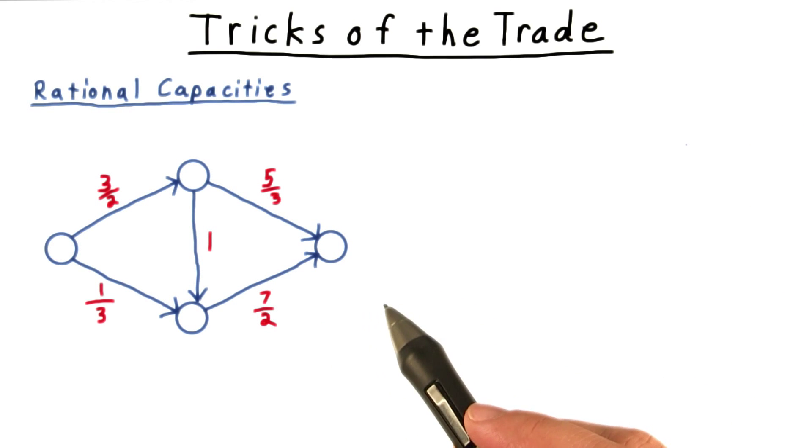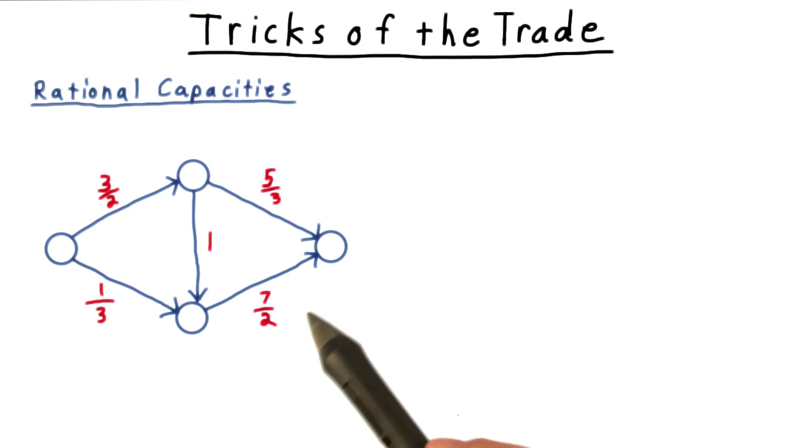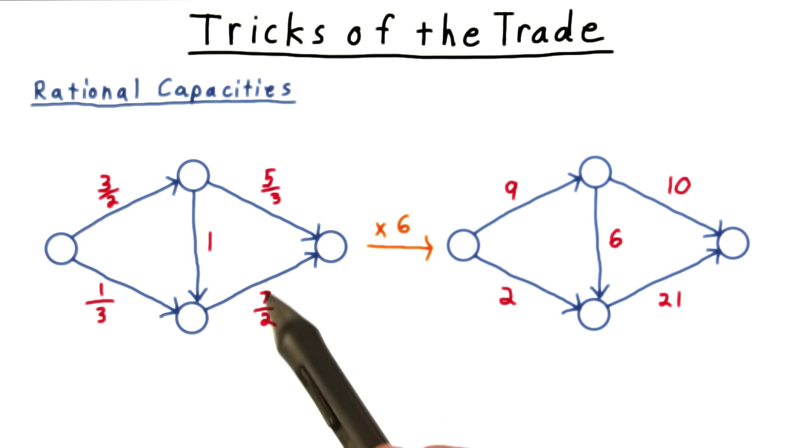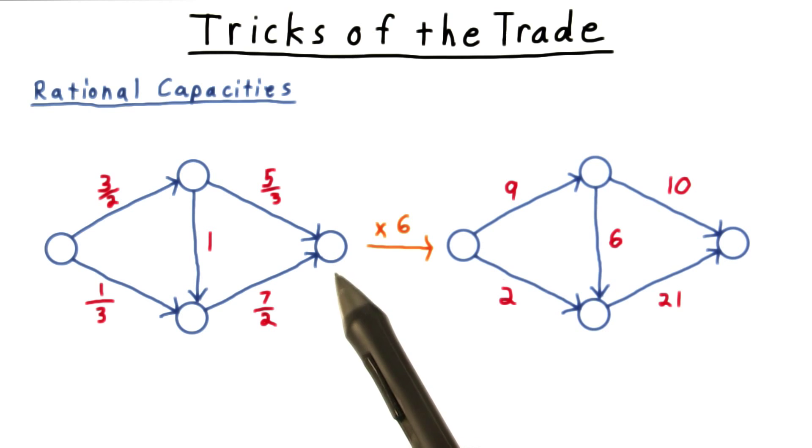One such limitation is the need for all the capacities on the edges to be integers. We can extend all our arguments to rational capacities just by multiplying the capacities by the least common multiple of the denominators to create integer capacities. So in this case, I would simply multiply all the capacities by 6. This just amounts to a change of units in our measurement of the flow.